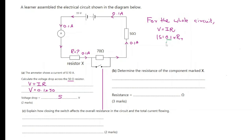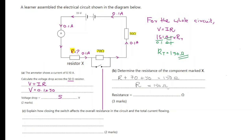Dividing both sides by 0.1, the total resistance of the circuit is 15 divided by 0.1, which is 150 ohms. Now, the resistors we have are 70 ohms, 50 ohms, and R. All of them add up to 150 ohms. So R plus 70 plus 50 equals 150 ohms. Since 70 and 50 is 120, R equals 150 minus 120, so the answer is 30 ohms.